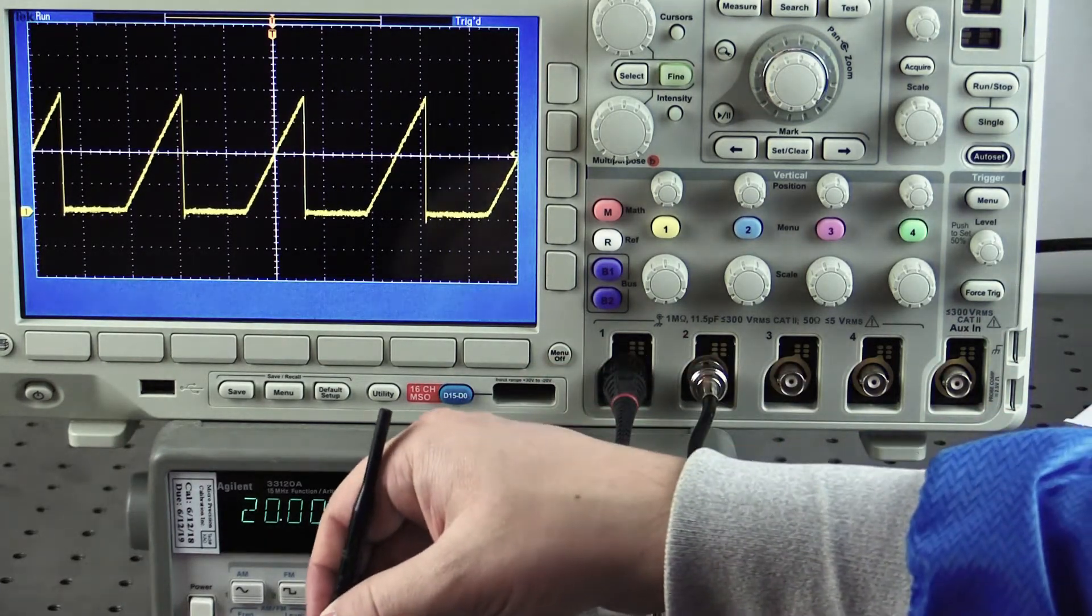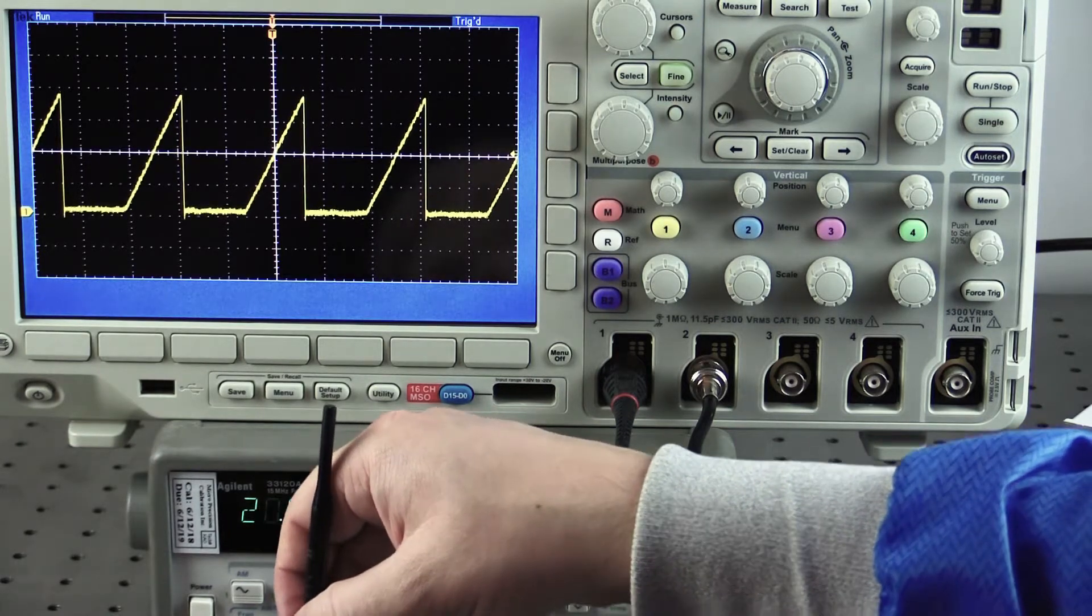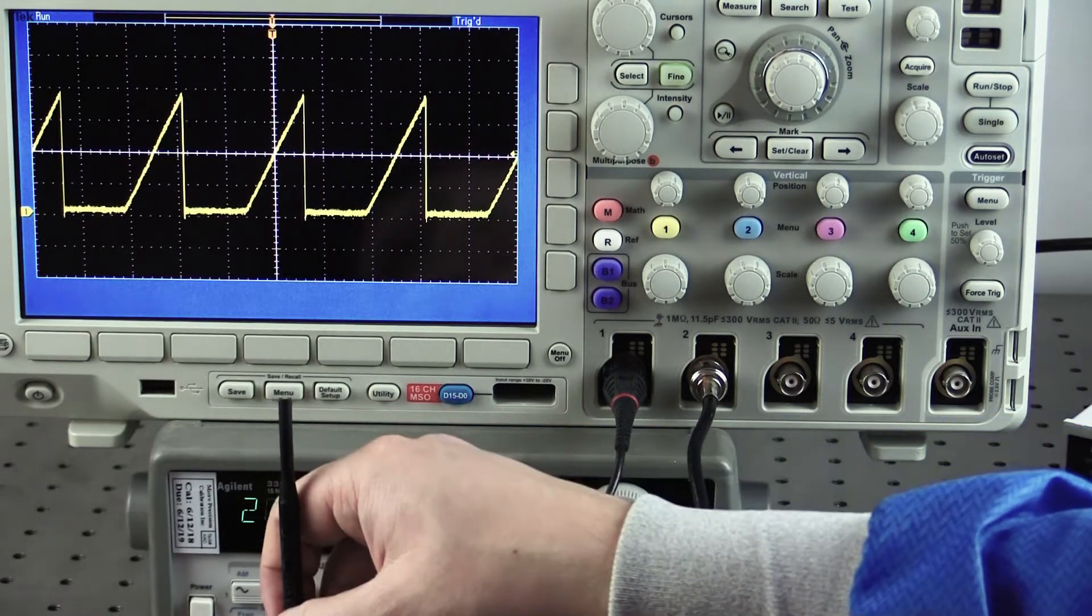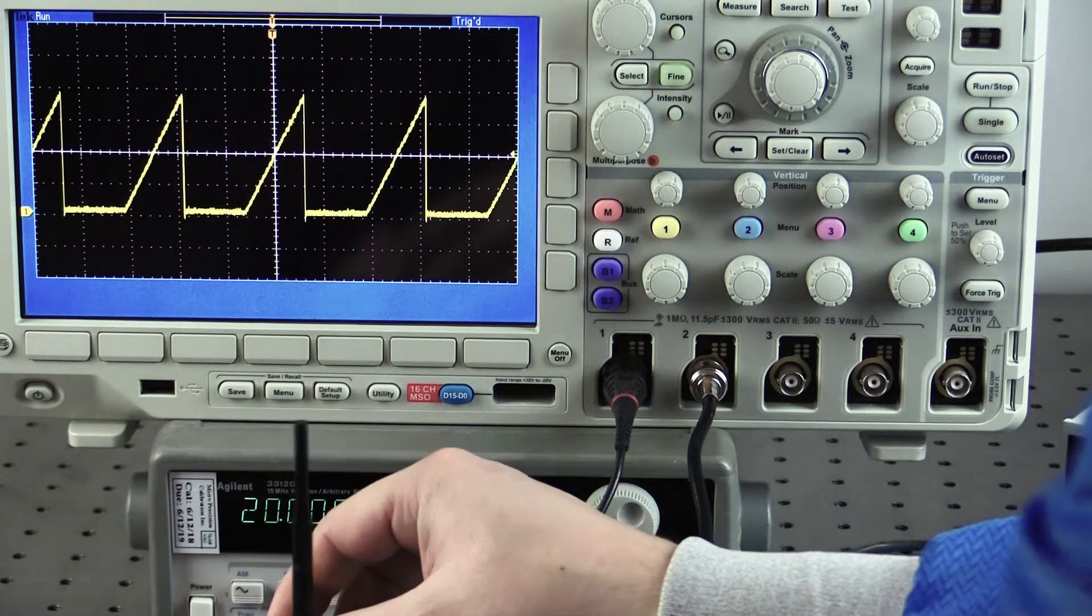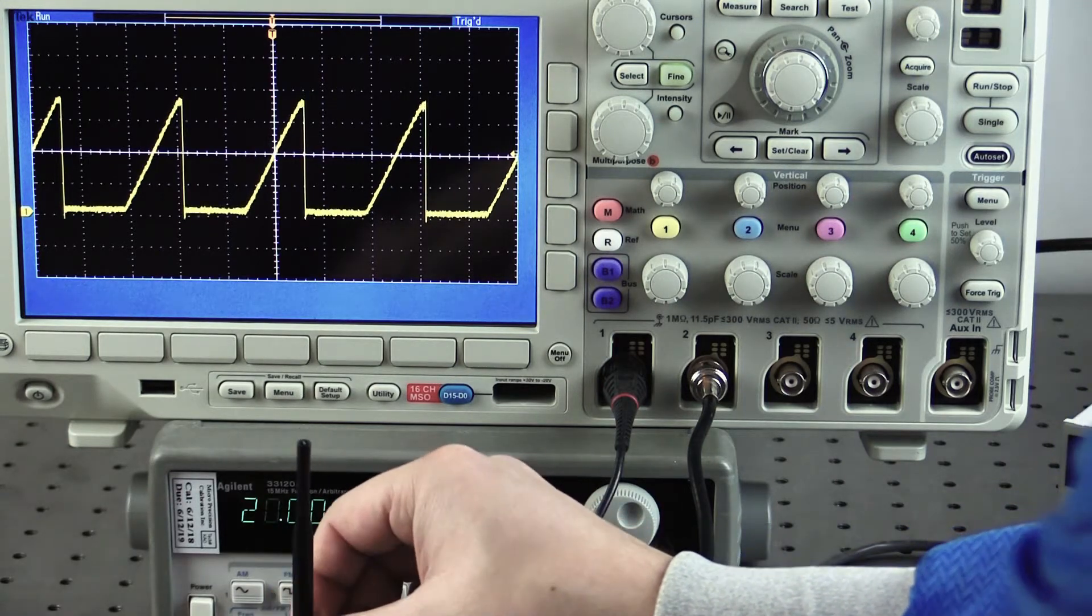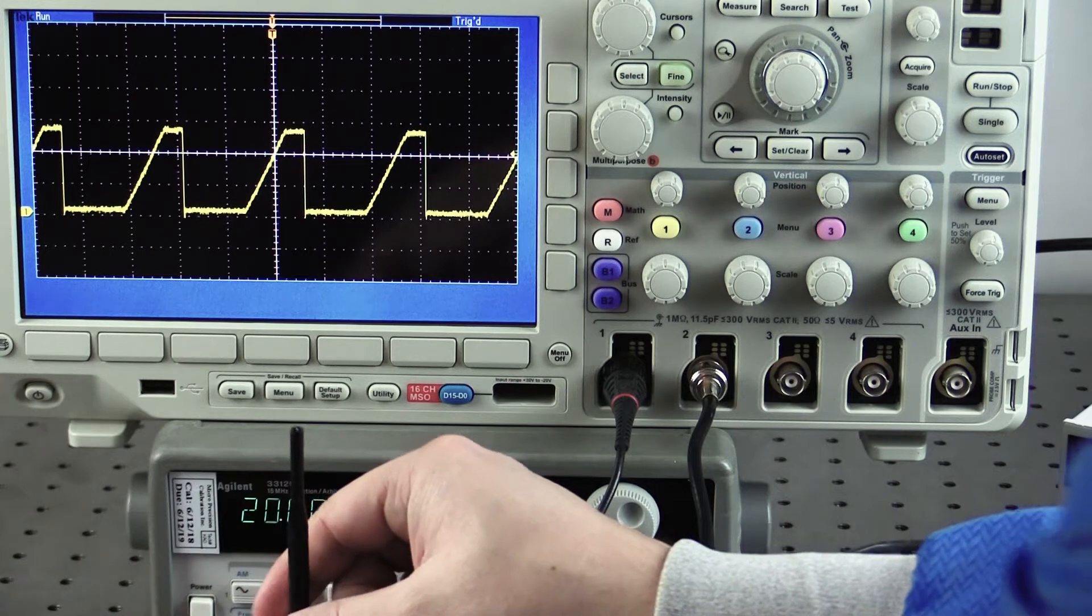To see the impact of the current limit on this external set point, turn the ILIM trim pot counterclockwise until the top of the sawtooth wave becomes flattened. The output current will not increase beyond the limit.